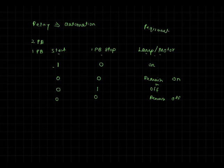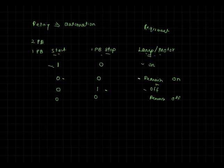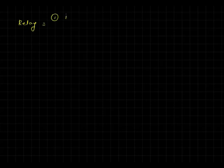This is my requirement: two buttons — start and stop — and one lamp. Now how can we use relays to perform this operation? A relay provides two key advantages: first, it provides electrical isolation — no direct contact between input and output. Second, it offers two contacts: one NO (normally open) contact and one NC (normally closed) contact, which can be used for interlocking.